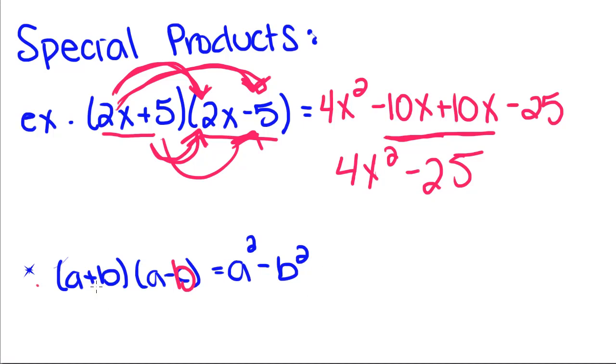These middle two terms are going to cancel out, and all you're going to be left with is a squared minus b squared. Because you're going to get, from doing the outsides, you're going to get negative ab. Doing the insides, you're going to get positive ab, and those are always going to cancel to 0. But remember, you can only use this shortcut when you have a plus b times a minus b. If these two terms have the same sign, the middle terms aren't going to cancel out.